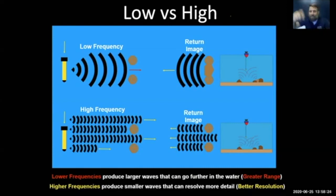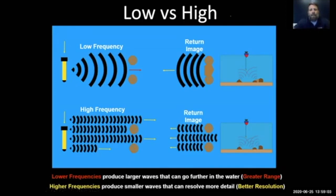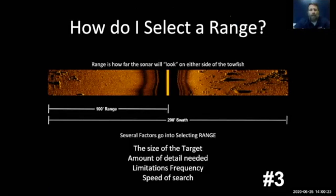You typically start with a lower frequency to do your search and then use your higher frequency to get better resolution after you've found your object. Start with your lower scan, find your object — those are anomalies that match the parameters of your target — then raise your frequency, lower the towfish, scan again, and see the image at higher resolution. That's the quick difference between low and high frequency.